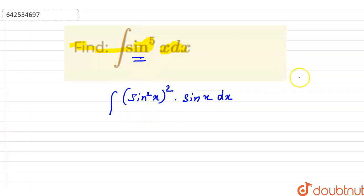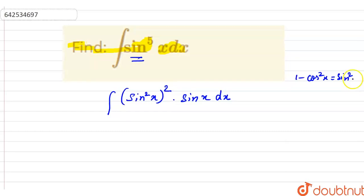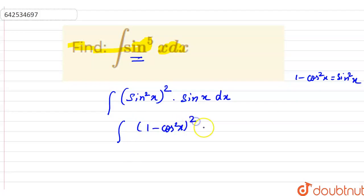As we know that 1 minus cos square x is equal to sin square x. By using this identity of trigonometry, the integral becomes 1 minus cos square x in place of sin square x, to the whole square, and here is sin x dx.